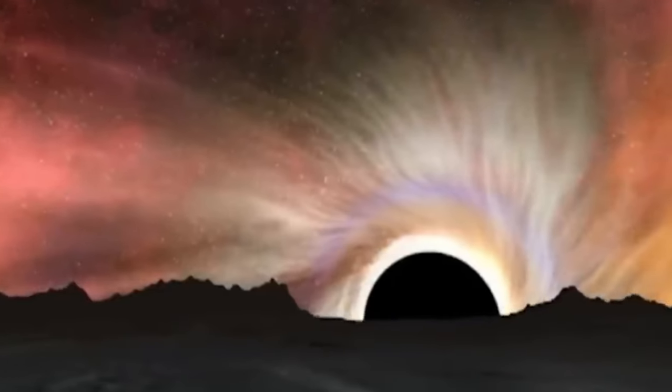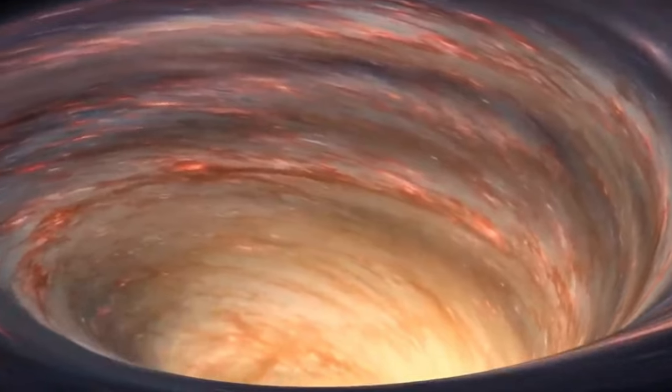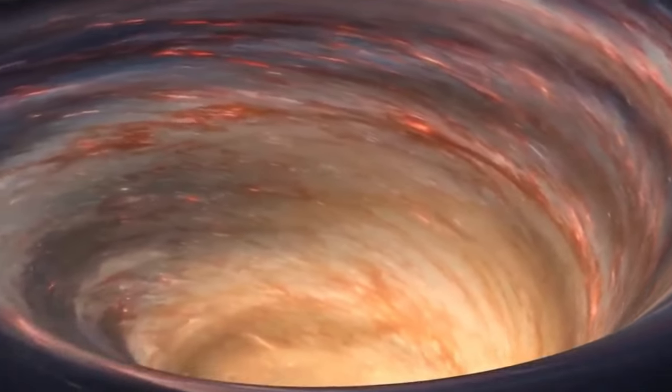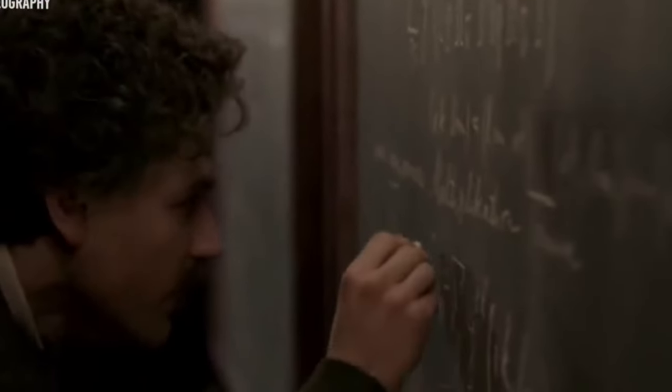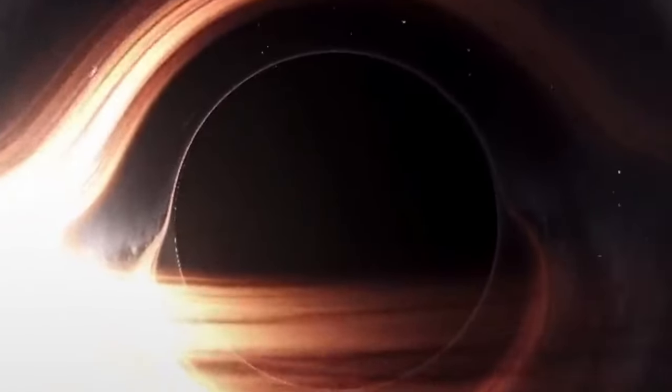When light rays are deflected by the immense gravity of a black hole, they can converge to a focal point, much like how a magnifying glass focuses light to form an image. Depending on the precise geometry, gravitational lensing can produce multiple images of the same background object.